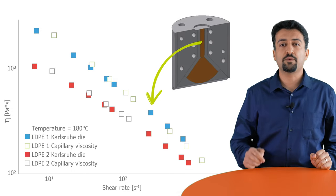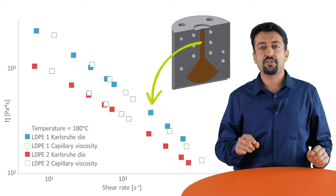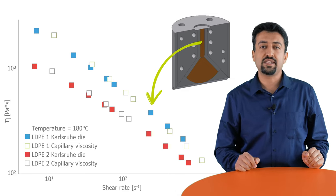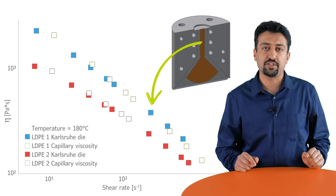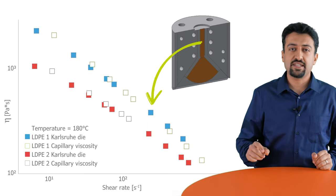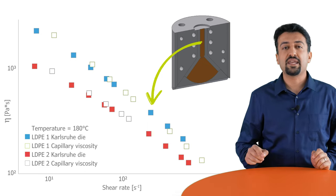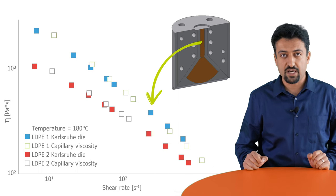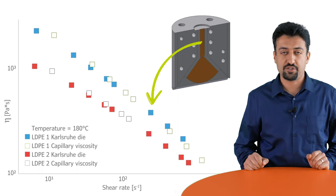As you can see from the graph, the values of steady state shear viscosity taken from the slit part of the die is compared with the steady state shear viscosity taken from the capillary dies after proper corrections.